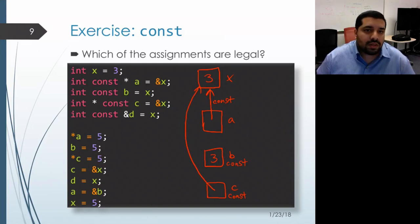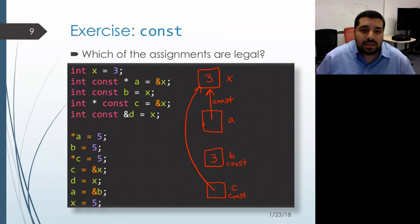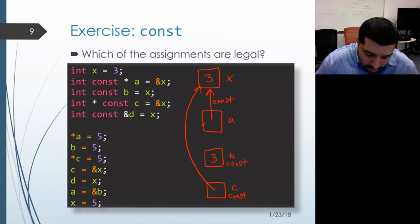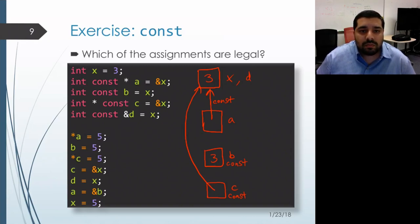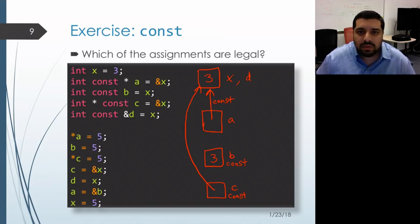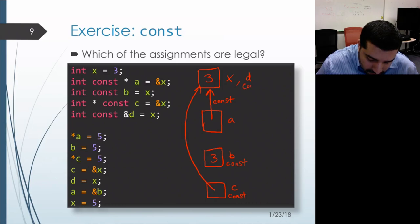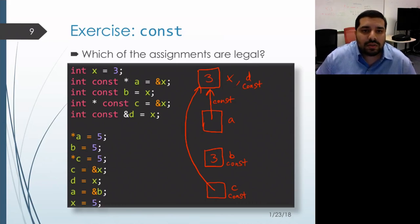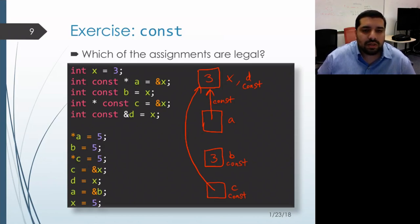There's no const on the left-hand side of the star for c, so we are actually going to be able to modify that object through this pointer. What we're not allowed to modify is the c object itself. Finally, we initialize d as a reference to x, so it's actually going to be an alias for that object. Since we declared it as a reference to a constant int, we won't be allowed to modify this object through the name d. We'll still be able to modify it through the name x, because we didn't put const when we declared x, but we won't be able to modify it using the name d.